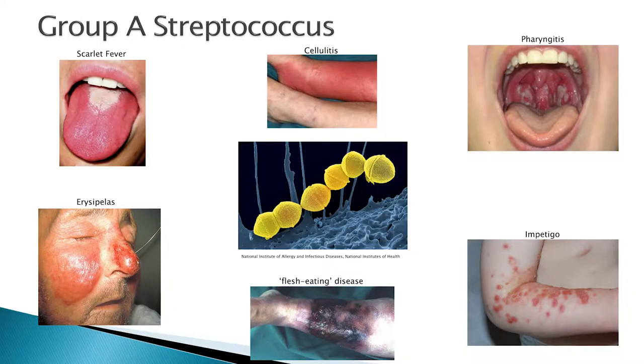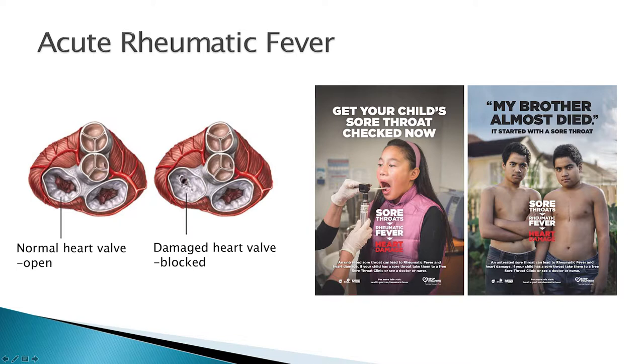The bacteria we're trying to protect you against is called Group A Streptococcus, shown in yellow up here, and it causes a really broad range of disease. Some of which we would all have had — quite mild, like pharyngitis — and then to really quite rare and nasty diseases such as flesh-eating bug disease, which still has a mortality of around 70 to 80 percent even today. But what we're really concerned about here in New Zealand is that we have the dubious honour of having the highest recorded rates of acute rheumatic fever in the world, and this is almost solely focused in our Māori and Pacific Island children.